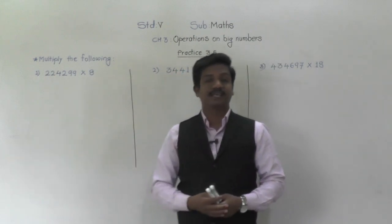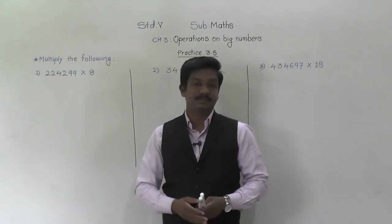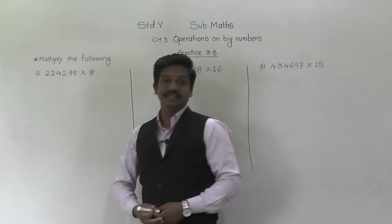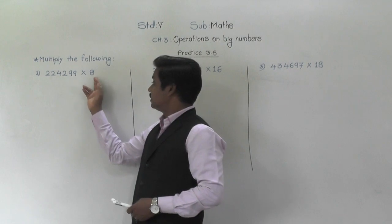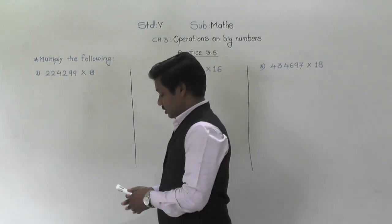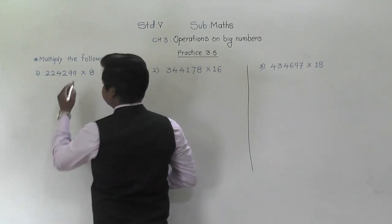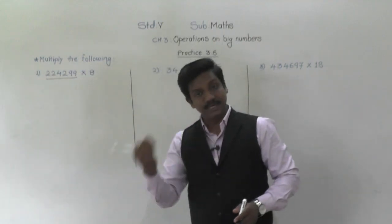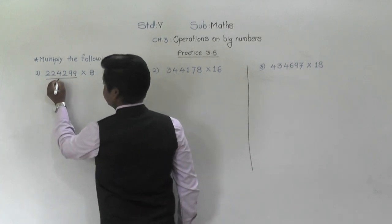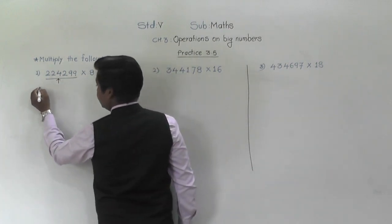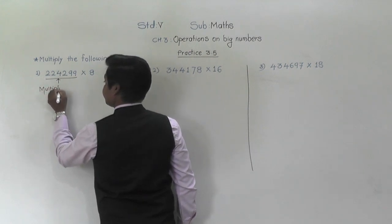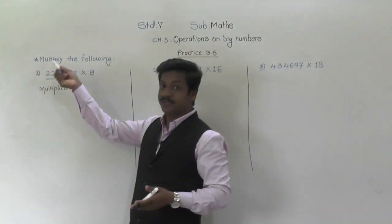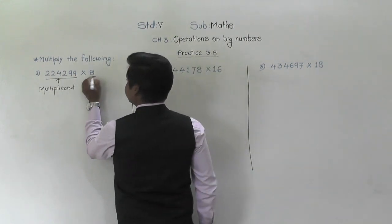We are going to solve examples from it. Before solving, let us know the terms in multiplication. See here: 2,24,299 into 8 — multiply by 8. So your two numbers are there. The number to which we multiply — 2,24,299 — that number is called the multiplicand. Multiplicand means the number to which we multiply.